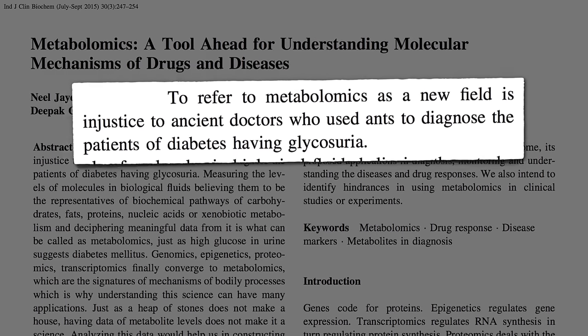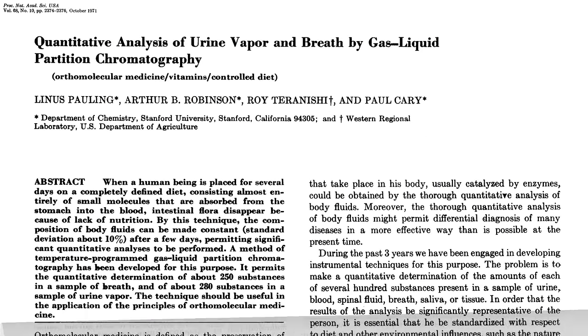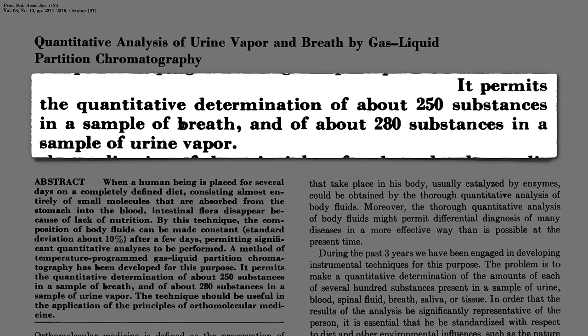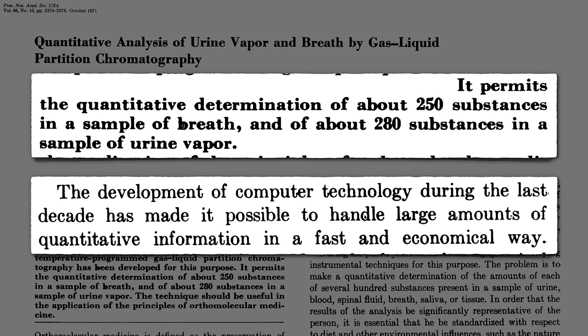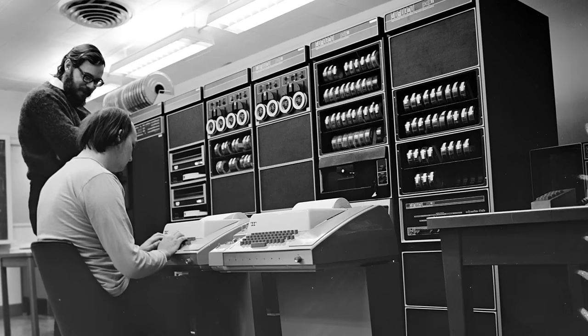To refer to metabolomics as a new field, though, is to do injustice to ancient doctors who used ants to diagnose people with diabetes, because the ants could detect the sugar in their urine. The first modern foray discovered hundreds of substances in a single breath, thanks to the development of computer technology that made it possible to handle large amounts of information. And that was in 1971, a time when computers looked like this.